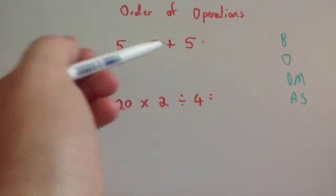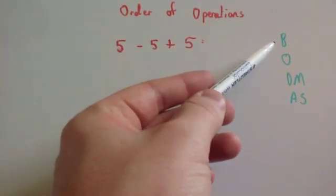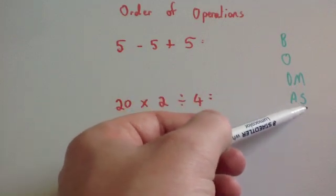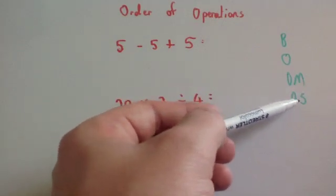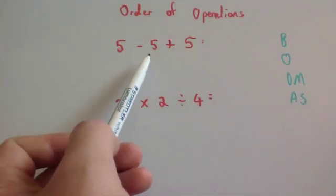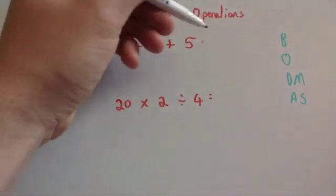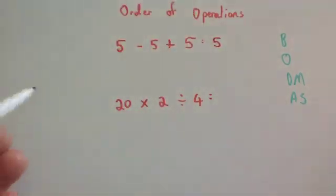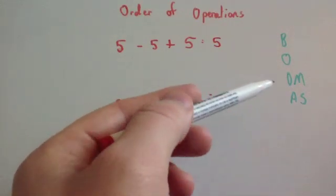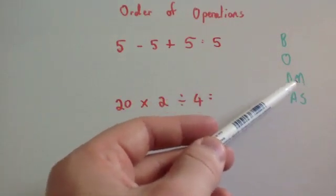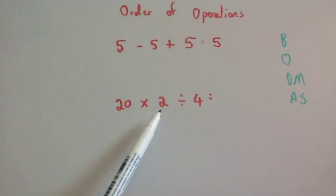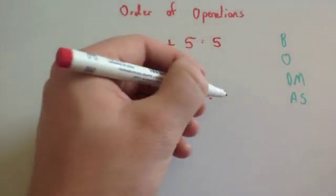We've got 5 take away 5 plus 5. There are no brackets, no orders, no division or multiplication — just addition and subtraction. When operations are of the same level, you work from left to right: 5 take away 5 is 0, plus 5 is 5. Next, 20 multiplied by 2 divided by 4: again just division and multiplication, so work left to right — 20 times 2 is 40, divided by 4 is equal to 10.